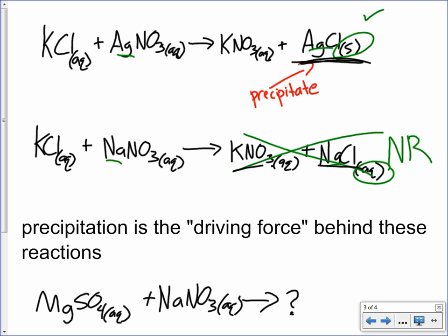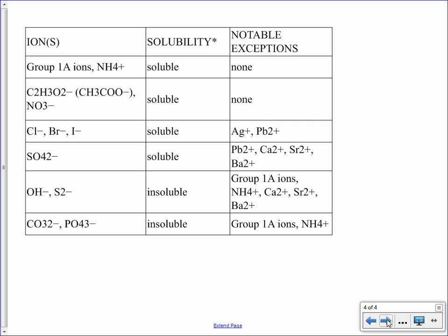Is potassium nitrate soluble or insoluble in water? Looking at our chart, we find nitrate — nitrates are soluble. Any nitrate dissolves in water and there are no exceptions, so potassium nitrate will dissolve, which is why we said it's aqueous. For silver chloride: chloride compounds are normally soluble, but silver is listed as an exception. So silver chloride is an exception to the rule — it is insoluble.